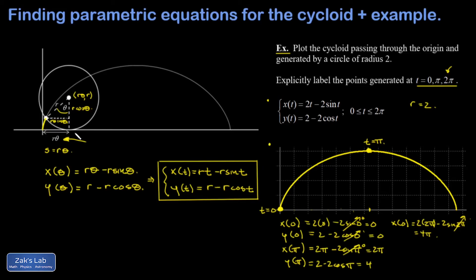Then y(2π)—as expected after one full turn—I get 2 minus 2 times 1, or 0, and I'm right here at the end of this first arch of the cycloid curve.